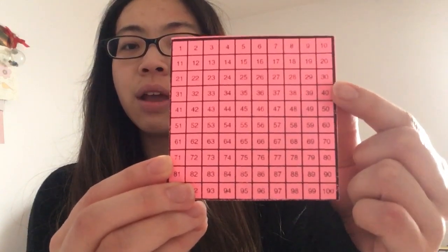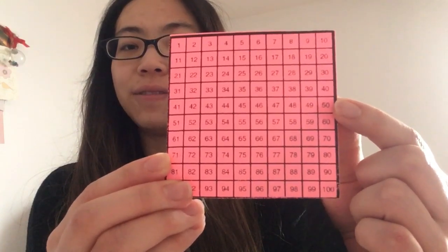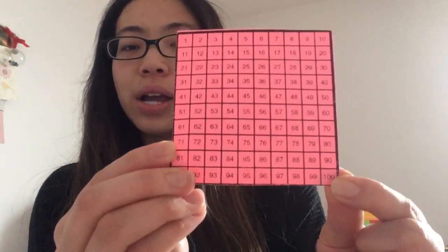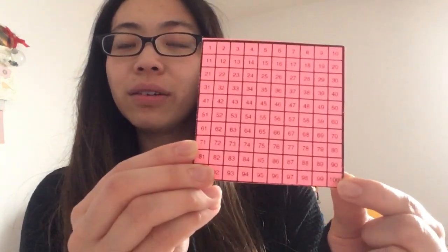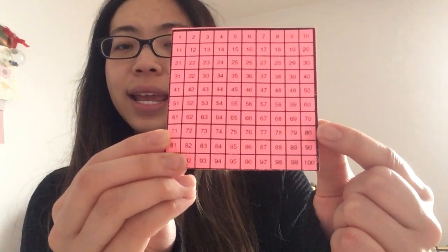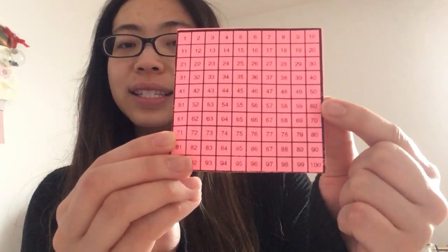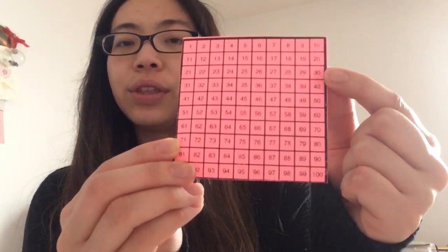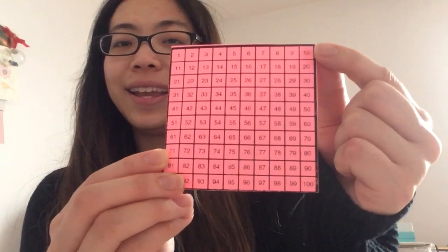Ten, twenty, thirty, forty, fifty, sixty, seventy, eighty, ninety, one hundred. Can we go backwards now? Count along with me. A hundred, ninety, eighty, seventy, sixty, fifty, forty, thirty, twenty, ten.